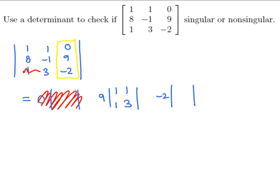And the submatrix for the minus 2 we get by crossing off the row and the column that contains the negative 2 to get the submatrix 1, 1, 8, minus 1.